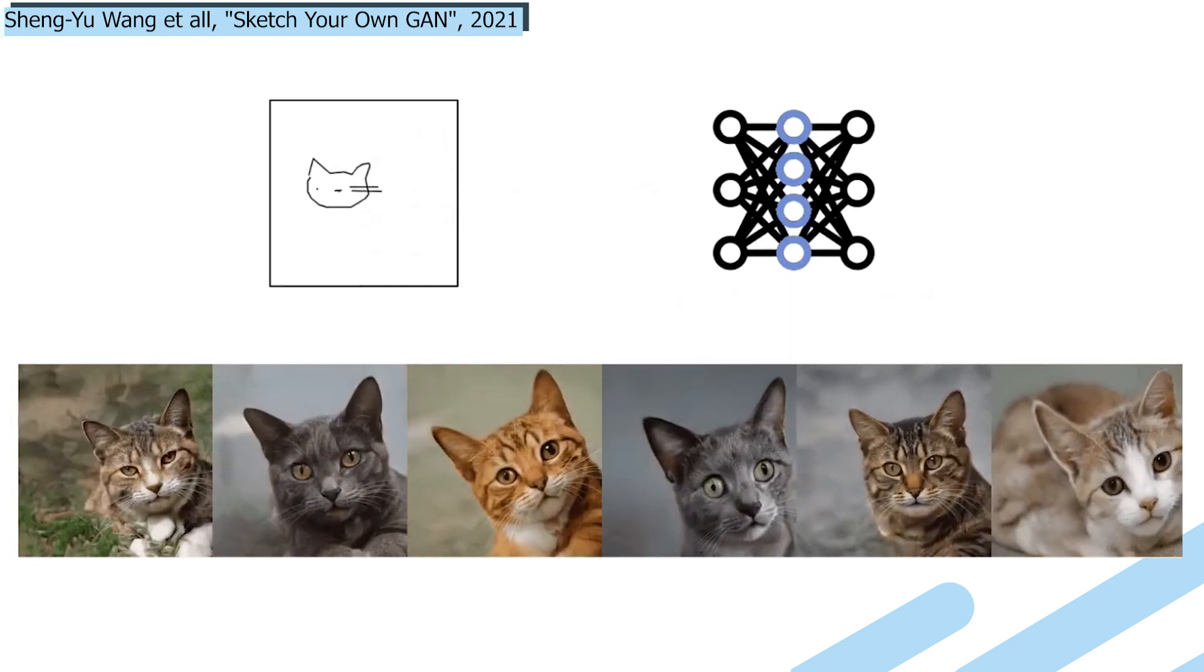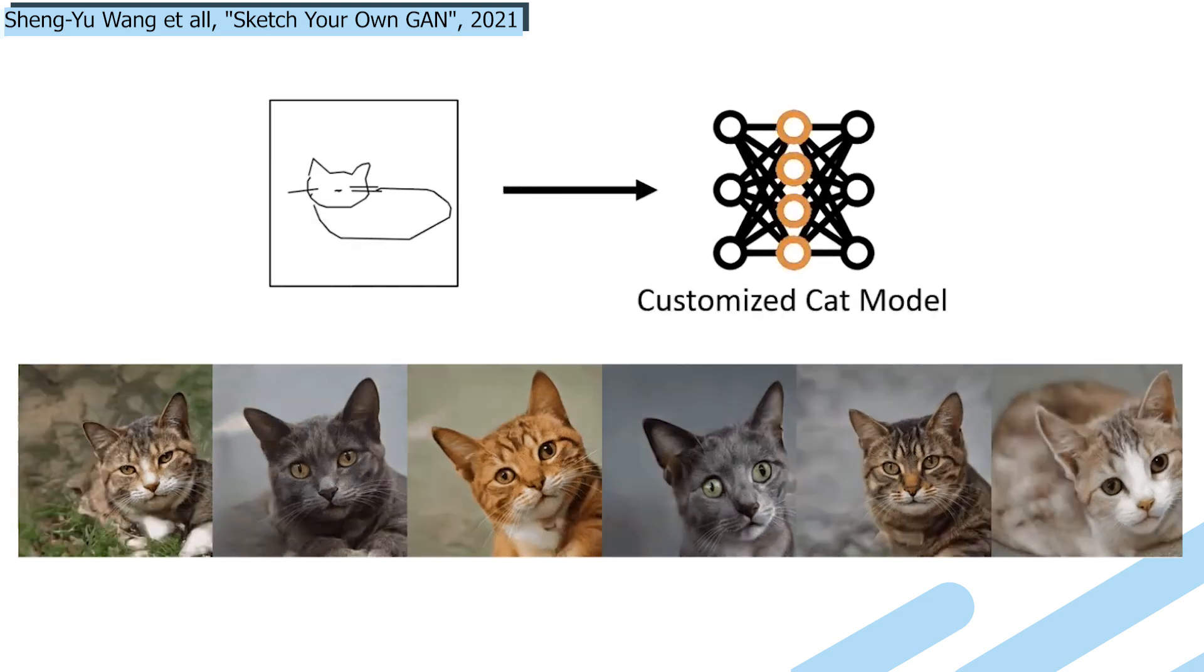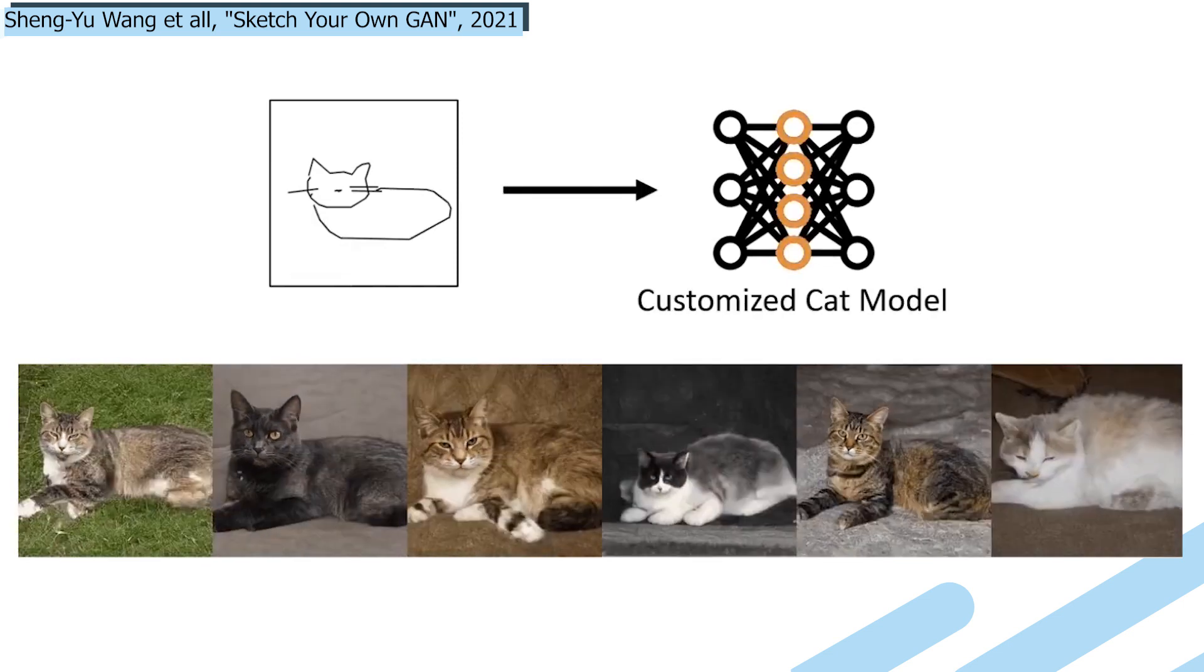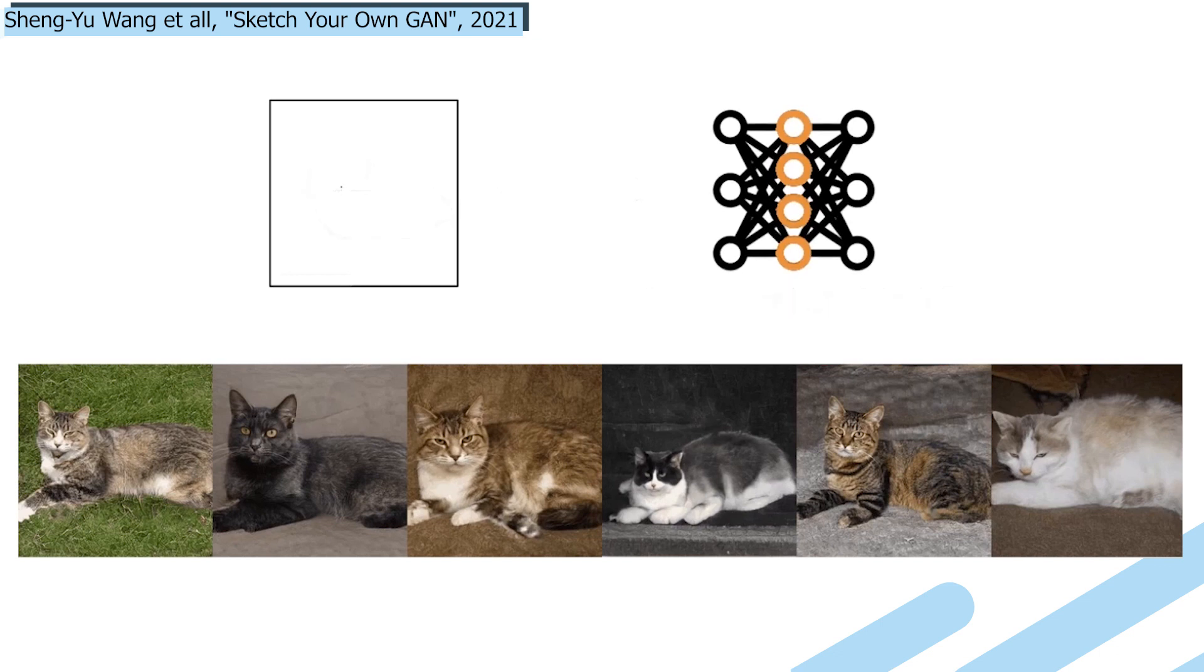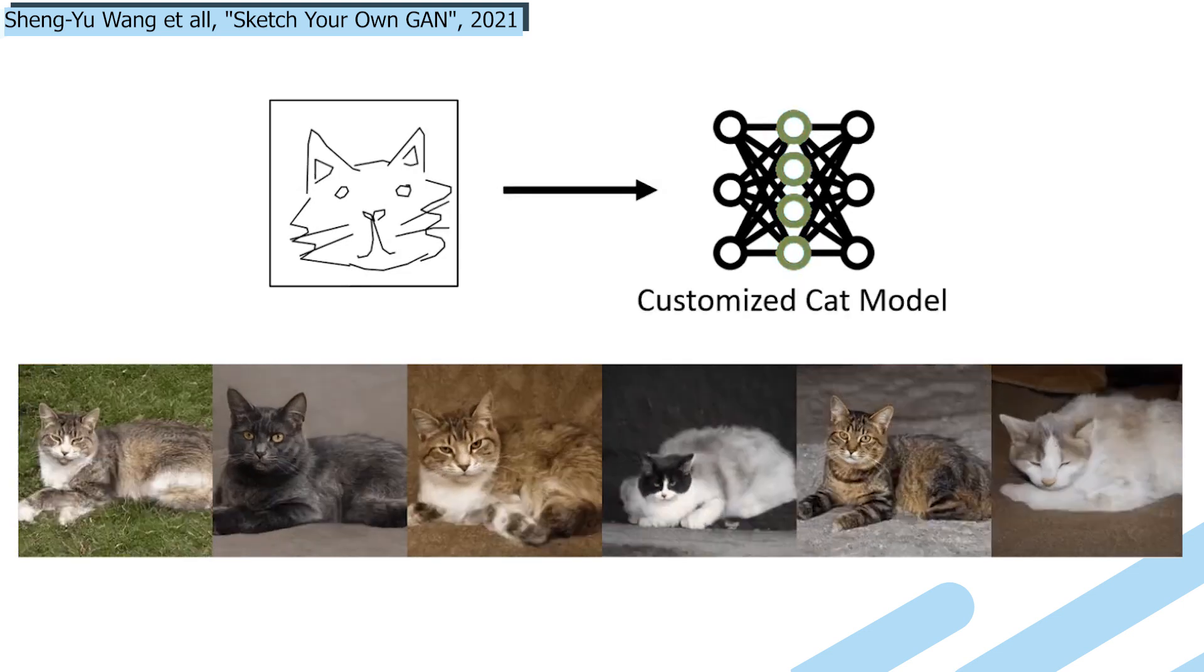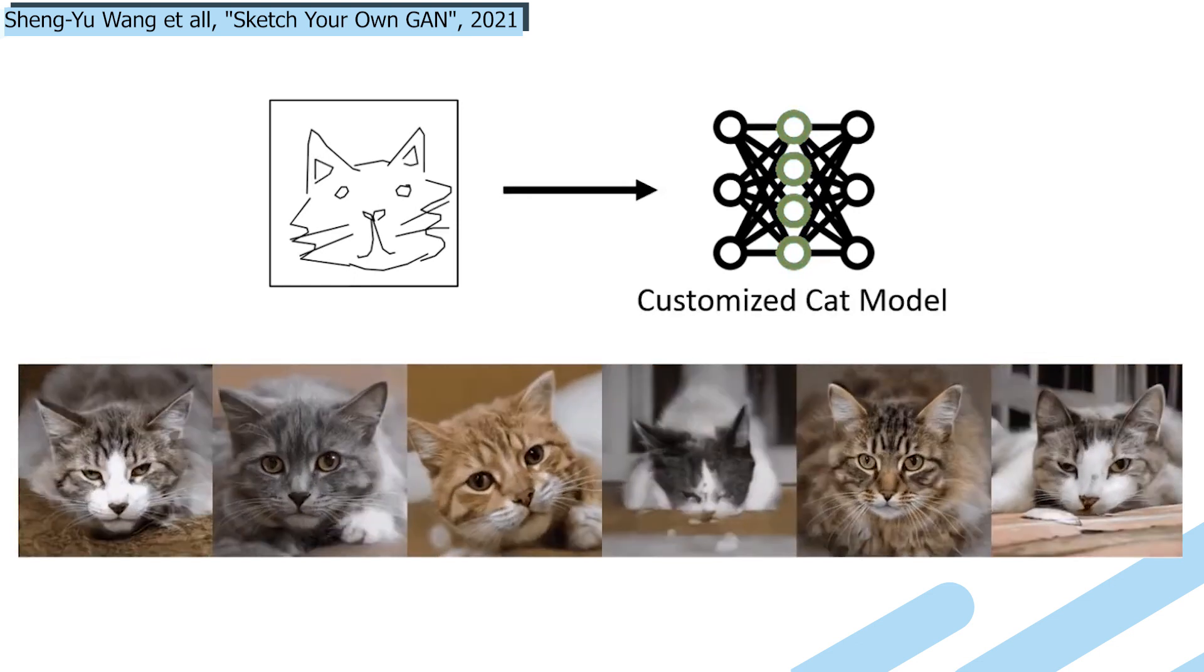It's an architecture to retrain a generator model, encouraging it to produce images with the structure provided by the sketches while preserving the original model's diversity and the maximum image quality possible. This is also called fine-tuning a model, where you take a powerful existing model and adapt it to perform better for your task.